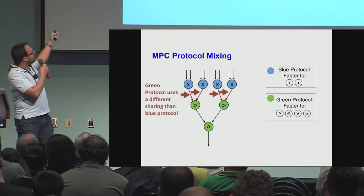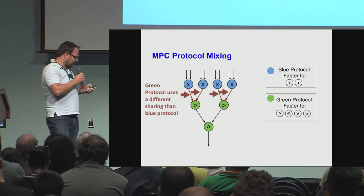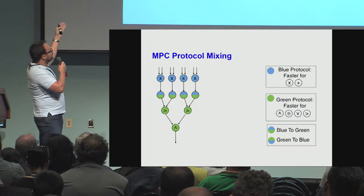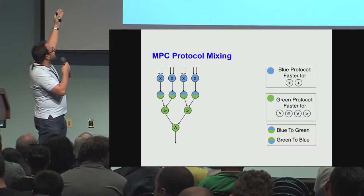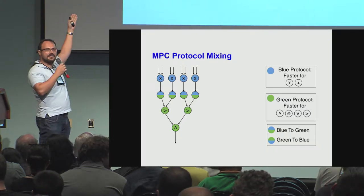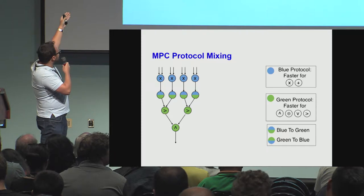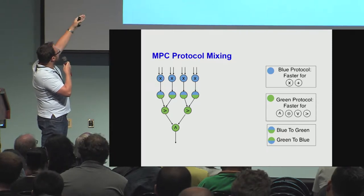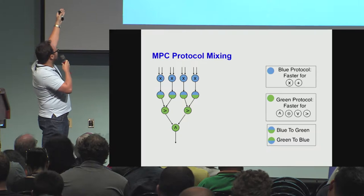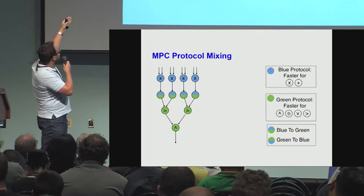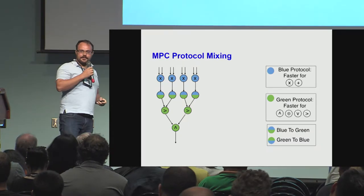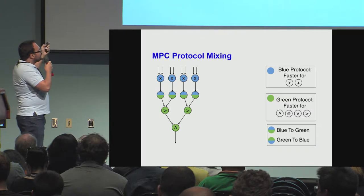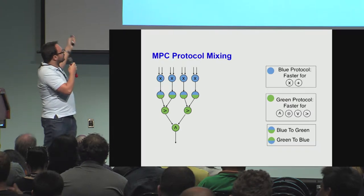We want to do it securely, so what we would need to be doing is computing something like this. Think of it as a metacircuit, where we have a combination of standard gates — like addition, multiplication, Boolean, and so on — and some conversion gates. And this is what we would be trying to do.